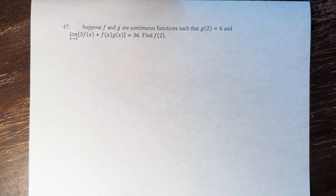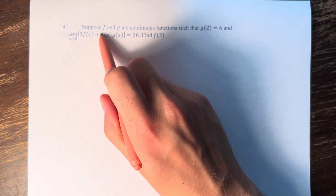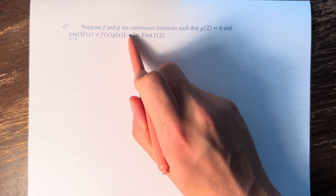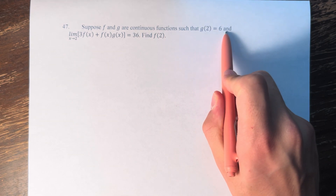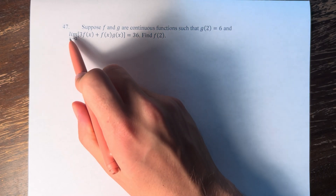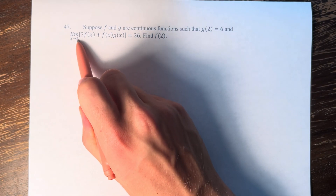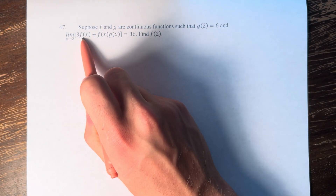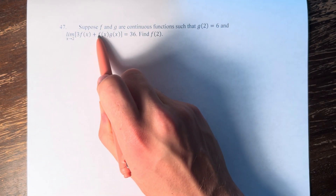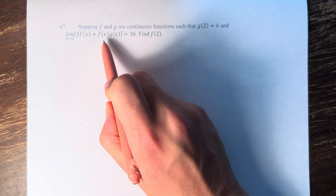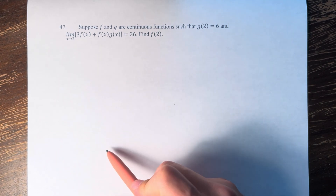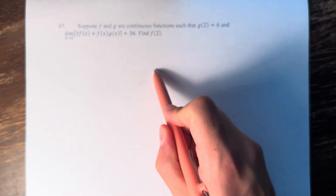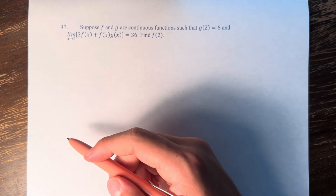Hello and welcome back to another video. In this problem we're asked to suppose that f and g are continuous functions such that g of 2 is equal to 6, and the limit as x approaches 2 of 3 times f of x plus f of x times g of x is equal to 36. We're asked to use this information to find f of 2.